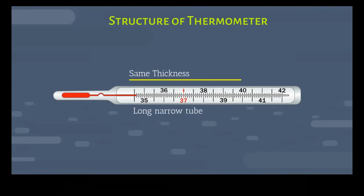Let's talk about the structure of thermometer. This is a liquid in glass thermometer with long narrow tube. There is a bulb here and mercury inside, and it contains the same thickness.